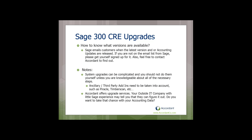How do you know what versions are available? Sage emails customers when the latest version or accounting updates are released. Make sure the right person in your office is on that list. If you're unsure of the latest version, you can always email Accordant. My contact information is at the end of this presentation.